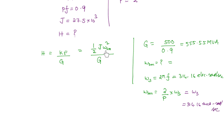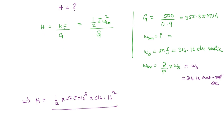Now we know J, ω_SM, and G, so we substitute all values: H = ½ × 27.5 × 10³ × (314.16)² divided by 555.55 × 10⁶. This gives H = 2.44 seconds.